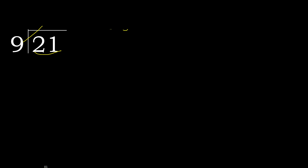9 multiplied by 3 is 27, which is greater. So 9 multiplied by 2 is 18 — 18 is not greater. 21 minus 18 is 3.